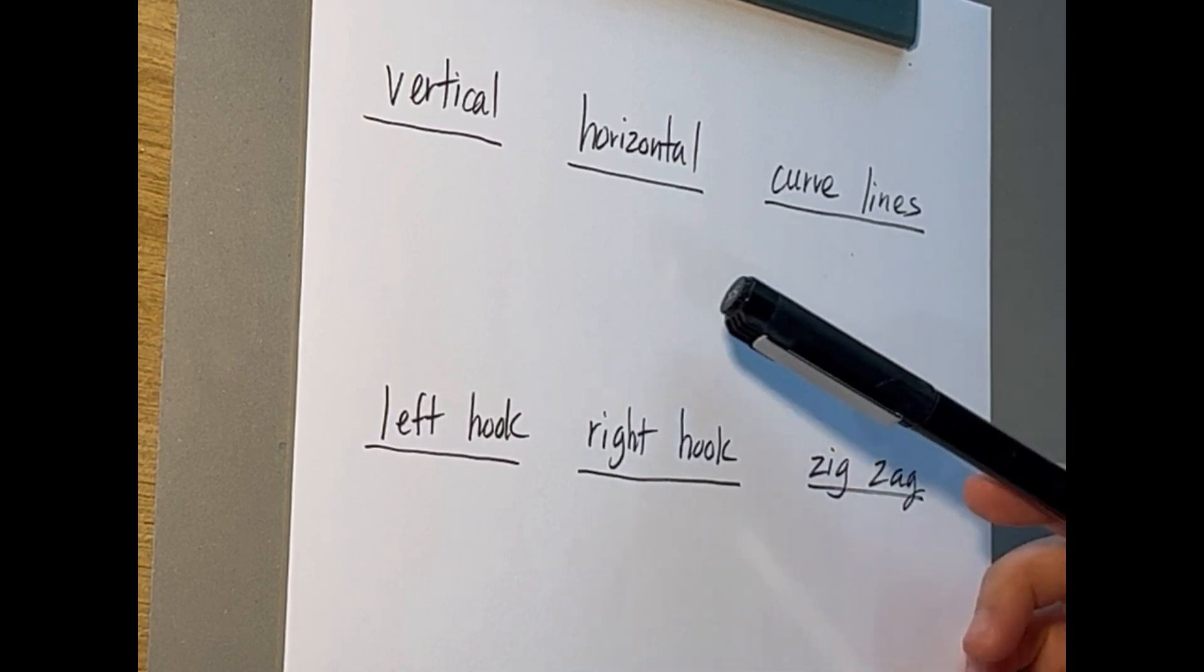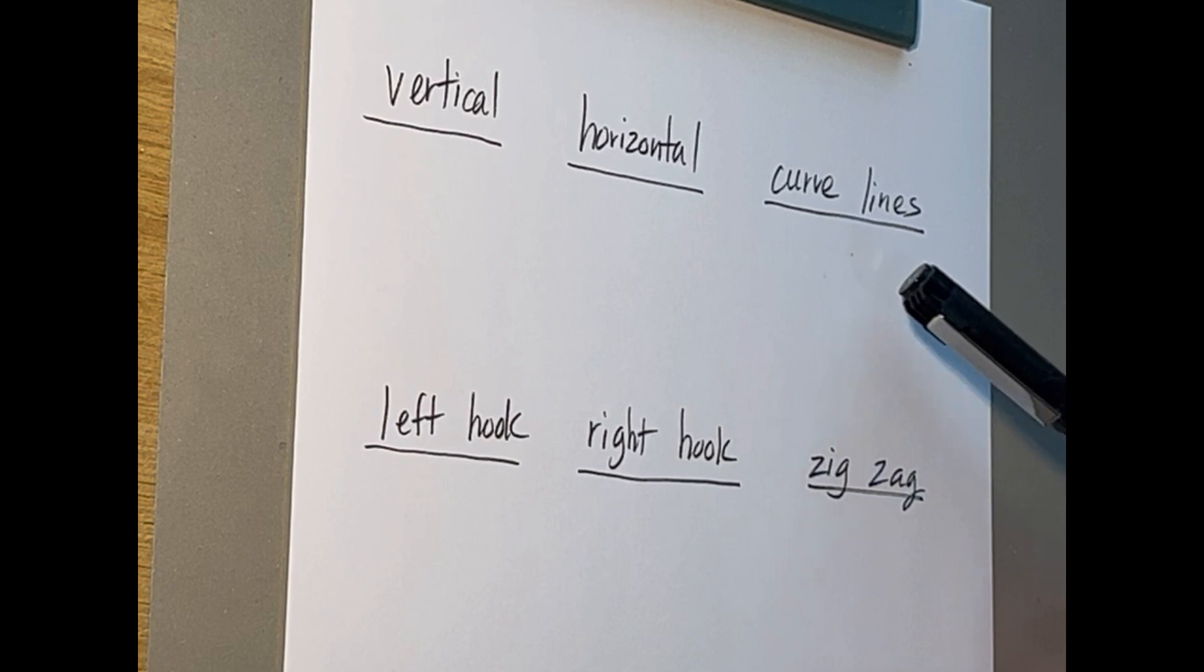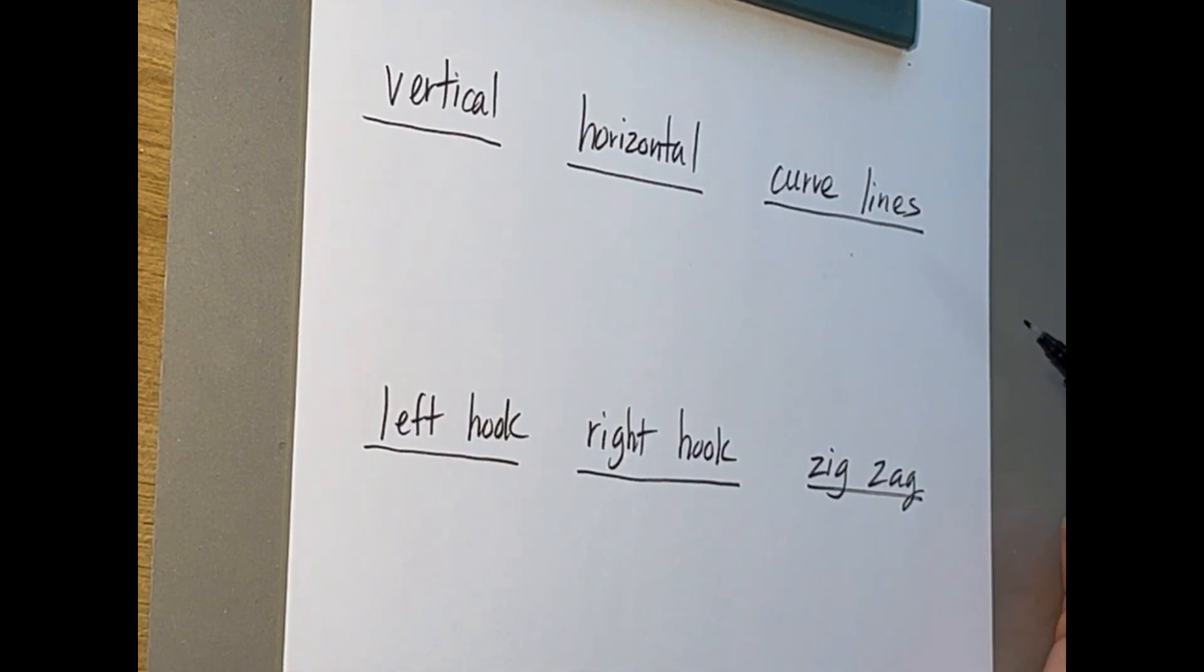So they're basically this number of lines that you can see in a Chinese character and I will show you what they look like.